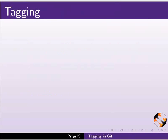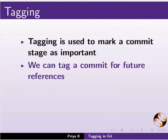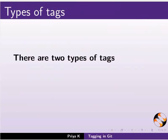Let us learn about tagging. Tagging is used to mark a commit stage as important. We can tag a commit like a bookmark for future references. Typically, this is used to mark the release point of a project such as v1.0. There are two types of tags: lightweight tag and annotated tag.